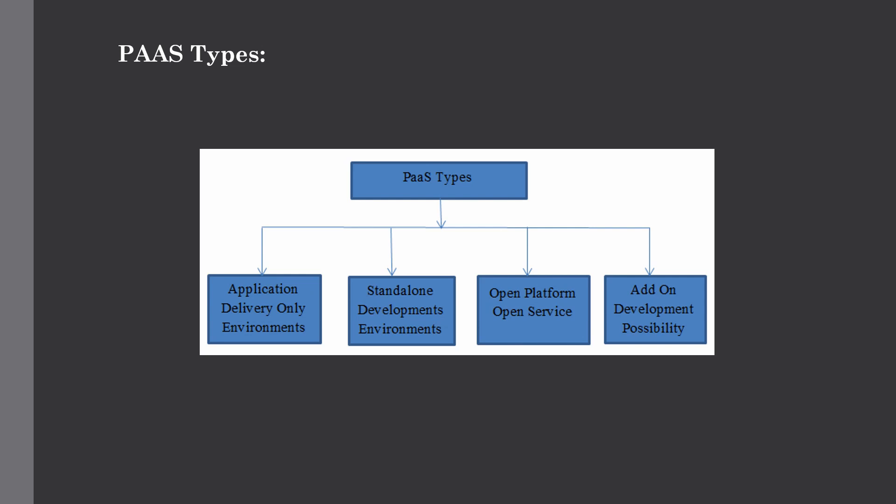The third type is open Platform as a Service, where open PaaS offers open source software that helps PaaS providers run applications. The fourth type is add-on development facilities, where add-on PaaS allows us to customize an existing SaaS platform. These are the four major types of PaaS.